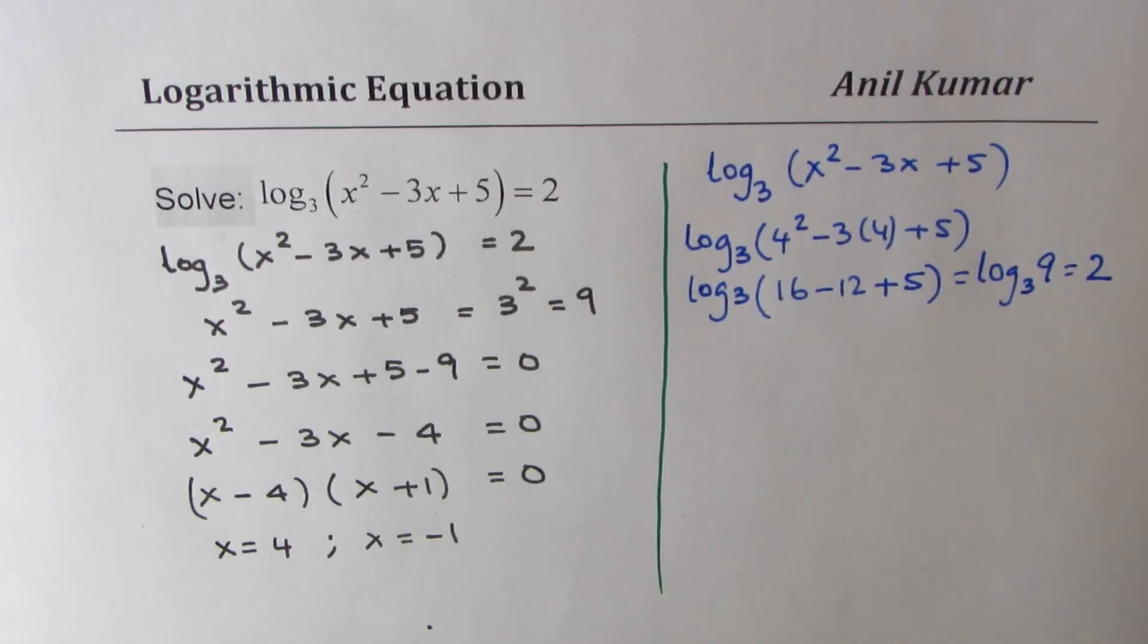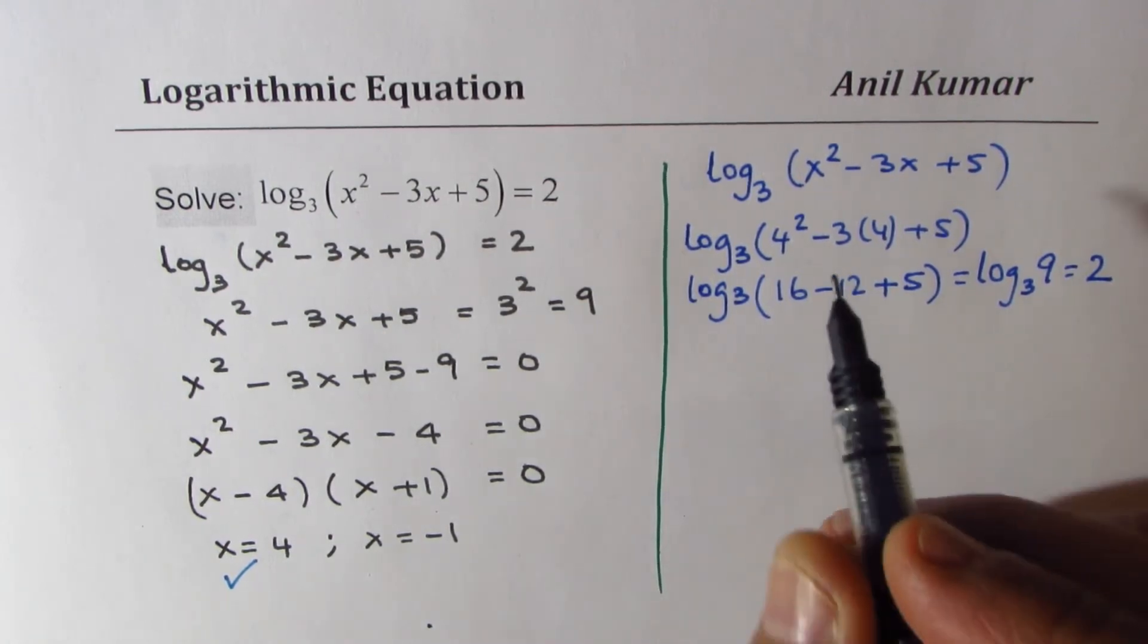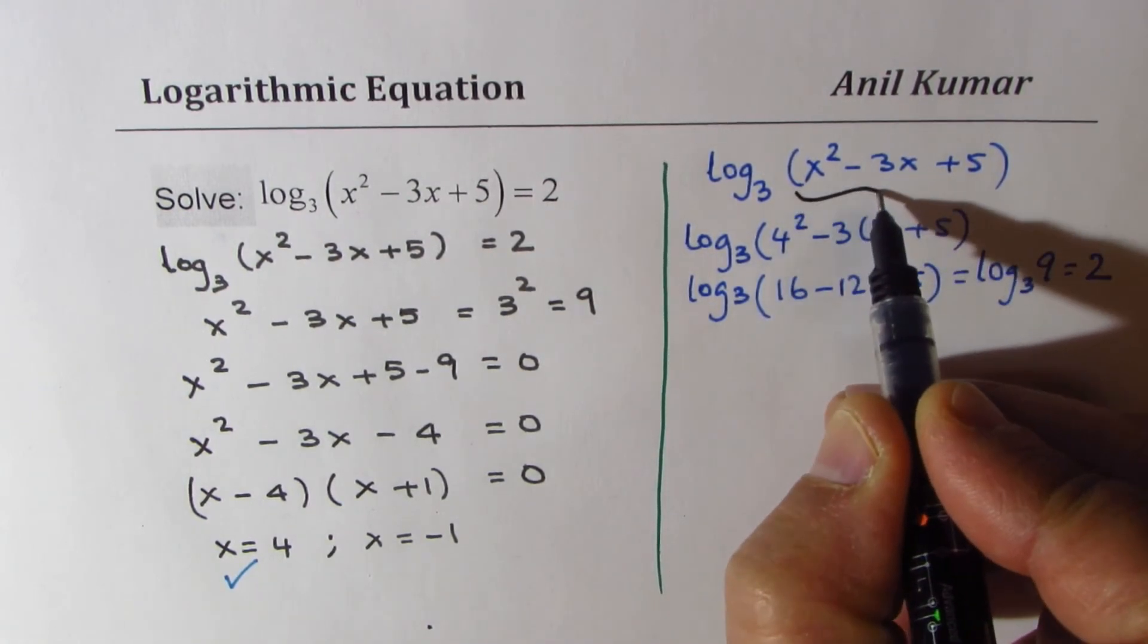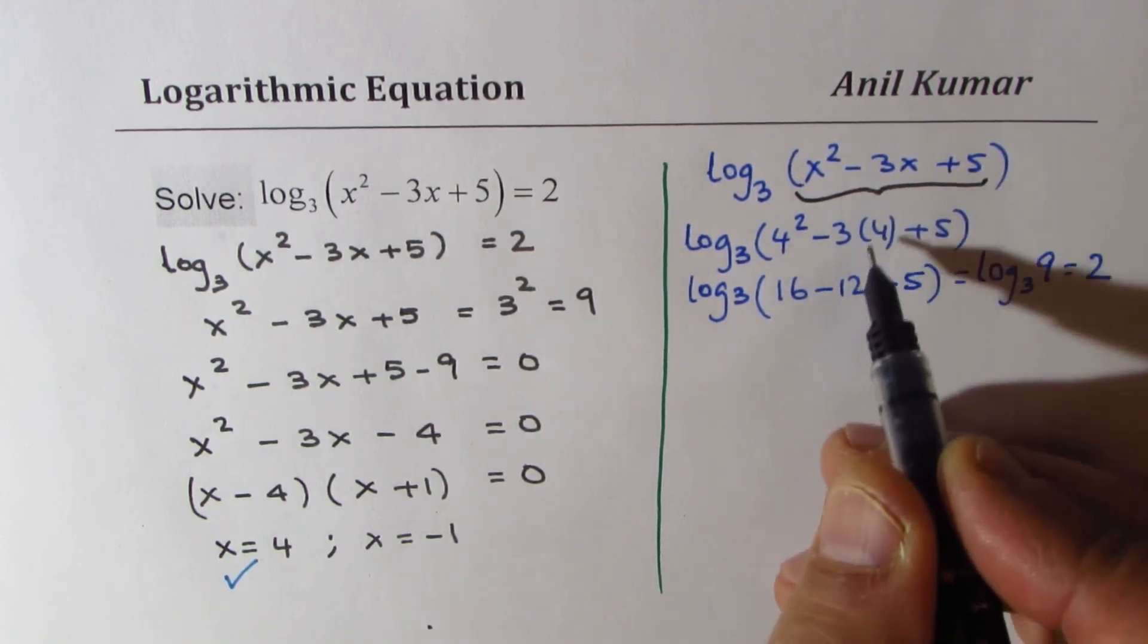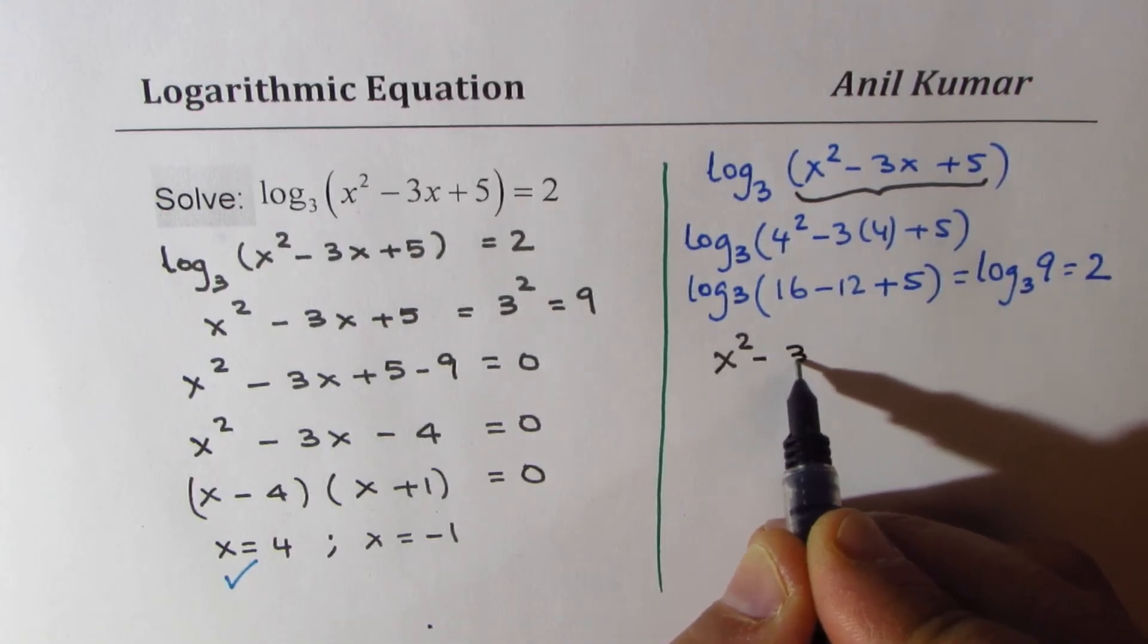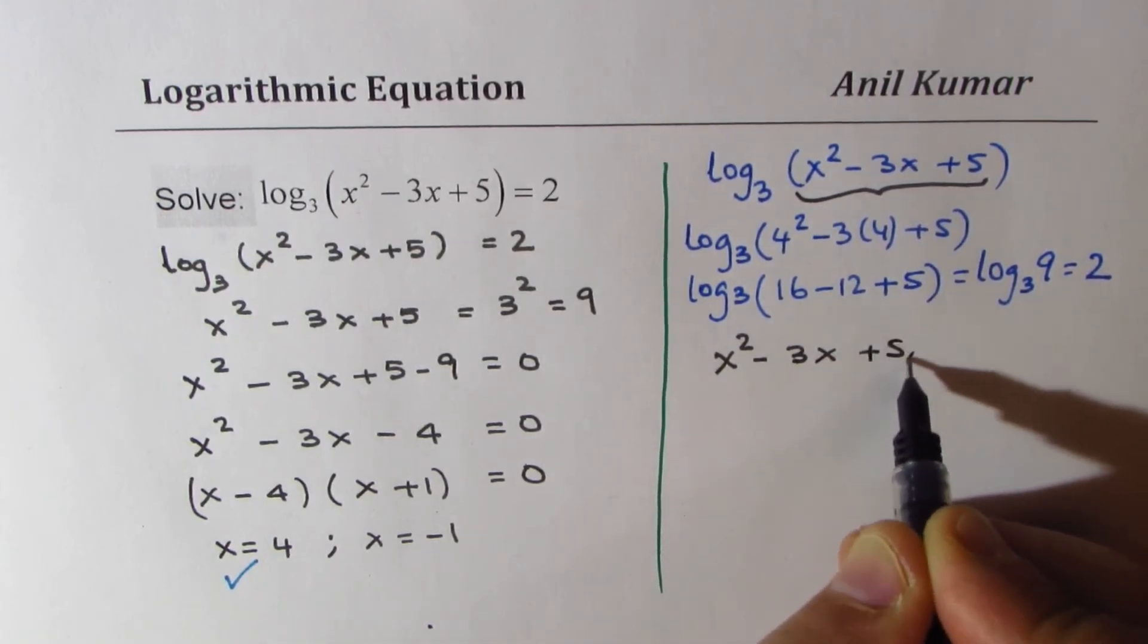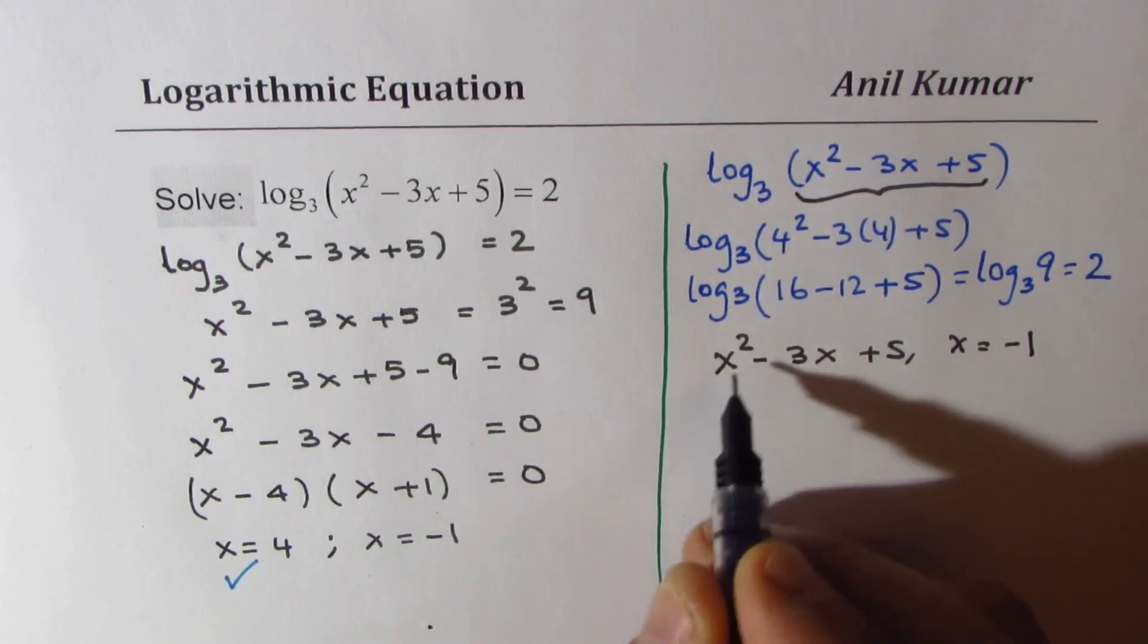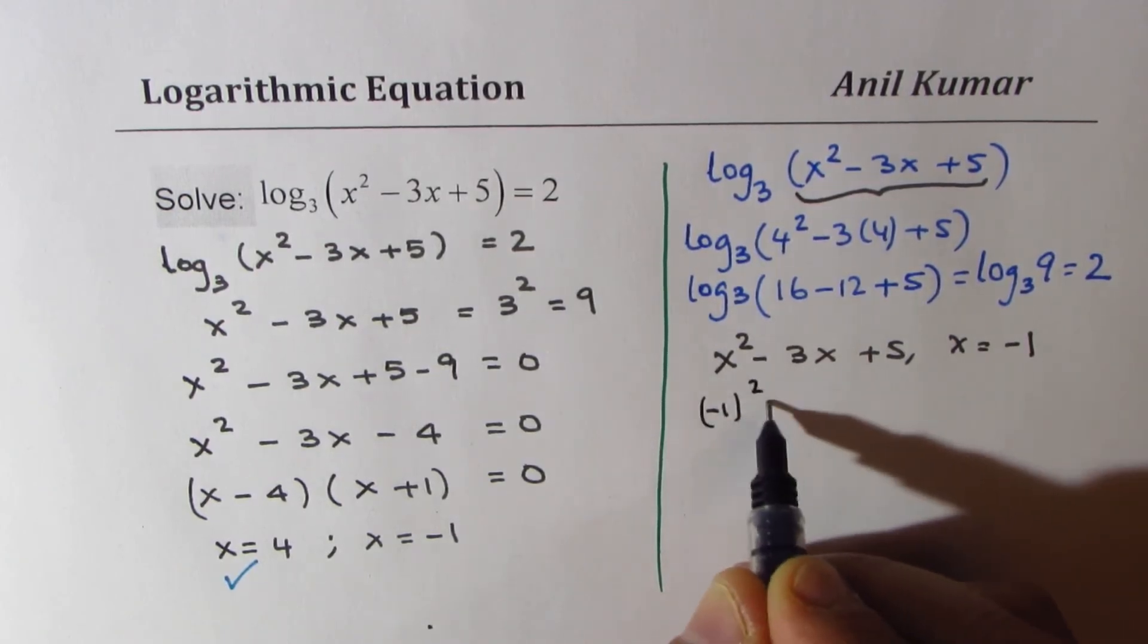The other value is -1. What you could also do is just check for this particular value to be 9, that should work. Now we'll check x² - 3x + 5 for x = -1.